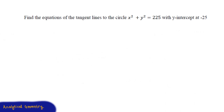In today's video, what we're going to do is find the equations of tangent lines to the circle defined by the equation x squared plus y squared is equal to 225, with a y-intercept at minus 25.